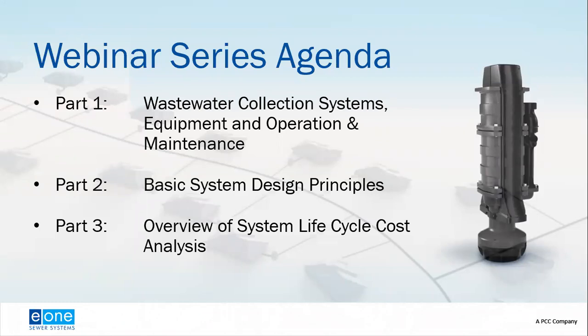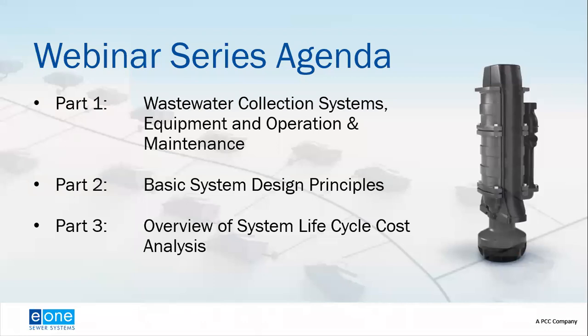In part one, we went over a general overview of wastewater collection systems, focusing on gravity sewer systems and pressure sewer systems, looking at the various components of the types of systems, how they work, and briefly touching on operation and maintenance. Today, we're going to go over the basic system design principles associated with gravity sewer and pressure sewers. Next week on Tuesday, we'll have an overview of system electrical cost analysis and also touch on the triple bottom line — looking at economic, social, and environmental cost.